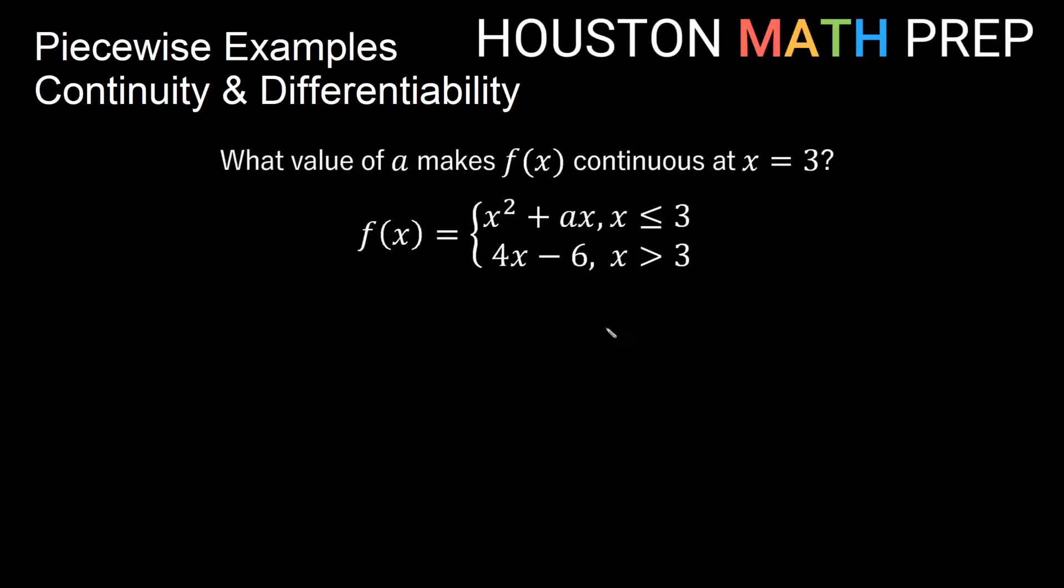Let's look at an example. Here we have a piecewise function. One piece is x squared plus ax, that's when x is less than or equal to 3. We also have a piece that is 4x minus 6, that's when x is greater than 3. We want to figure out what value for a, so this is some number a times x in this term here, what value of a makes this continuous at x equals 3, where we go from one rule to the other. You can tell that happens at x equals 3 just by looking at it.